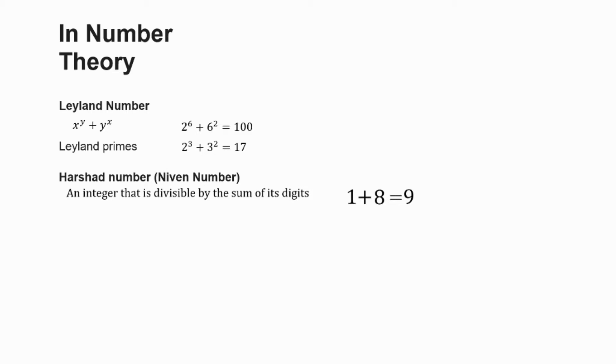Now in the case of 100, especially in base 10, this is pretty simple. 100 is 1 and 0 and 0, which equals 1, and everything can be divided by 1. But 100 is also a Harshad number in other bases.